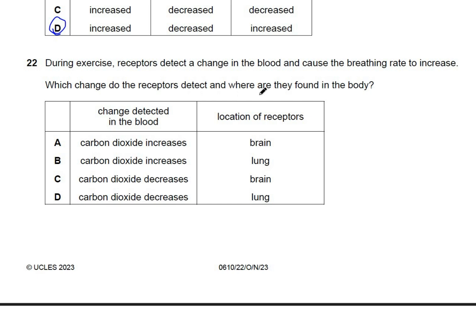Question 22: during exercise, receptors detect a change in the blood that causes breathing rate to increase. The change detected is an increase in carbon dioxide concentration. The receptors are located in the brain, which signals the lungs to breathe more quickly to expel the excess CO₂. The answer is A.